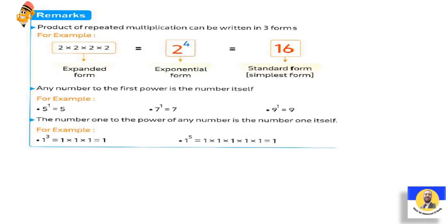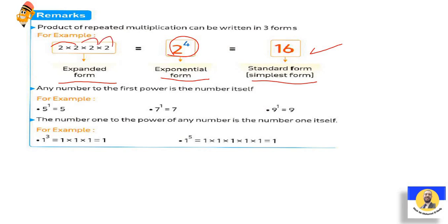Remark: Product of Repeated Multiplication can be written in 3 forms. أقدر أكتبه على شكل الـExpanded Form اللي هي Repeated Form: 2 × 2 × 2 × 2. أو شكل الـExponential Form: 2 to the Exponent 4. أو على شكل الـStandard Form اللي هو نطلع الـAnswer على طول: 2×2=4، 4×2=8، 8×2=16.